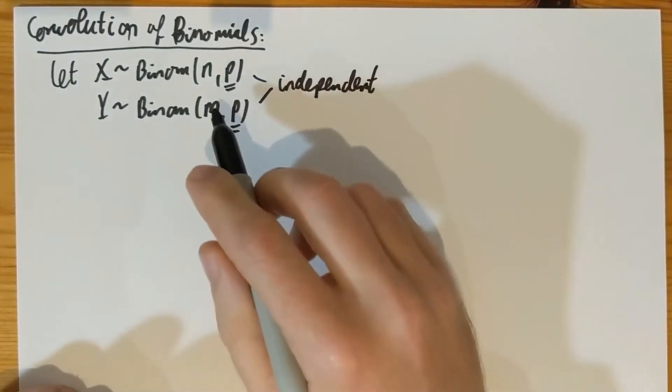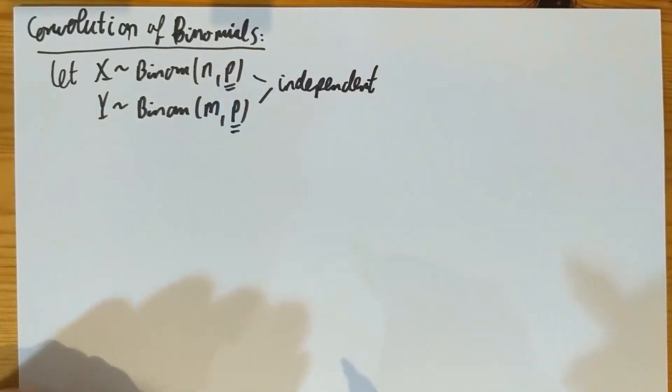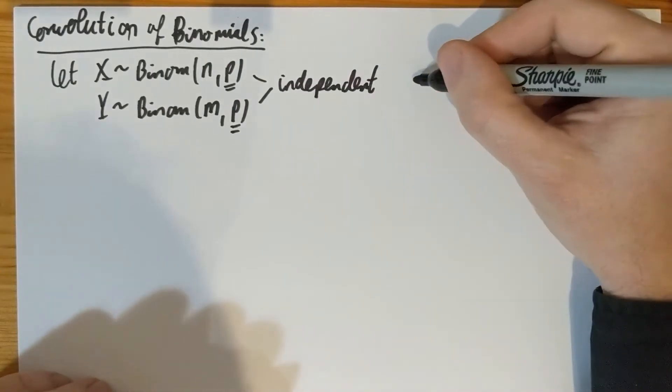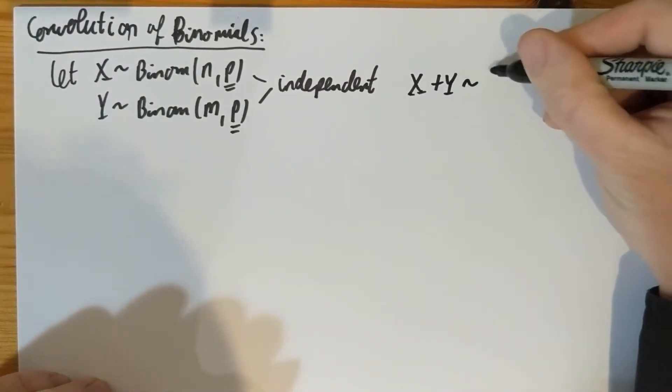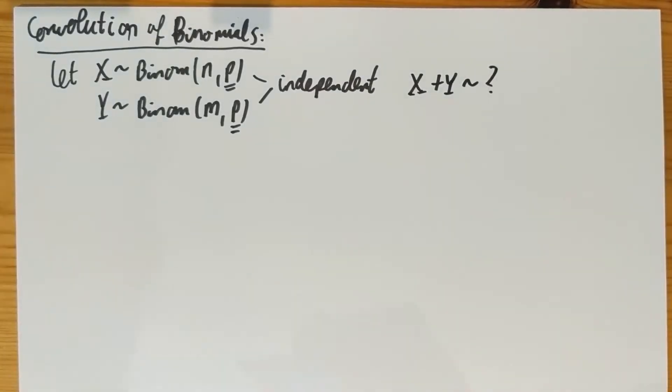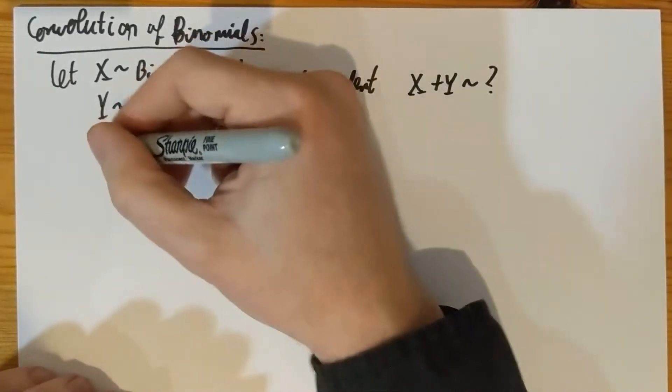So the first parameter, the number of trials can be different, but the success probability must be the same. And I want to find out about the sum of these two. What is the distribution of the sum of these two random variables?